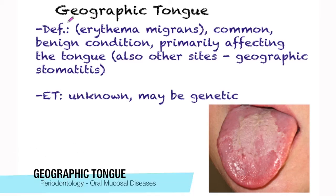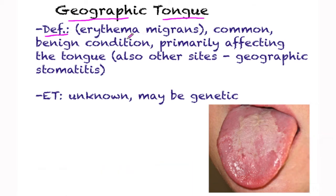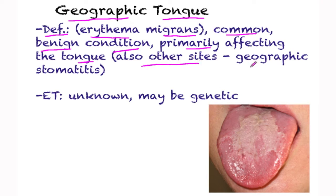Geographic tongue, also called erythema migrans, is a common benign condition primarily affecting the tongue, but also other sites — in that case it's called geographic stomatitis. The etiology of this disease is unknown, though it has been thought to be genetic.